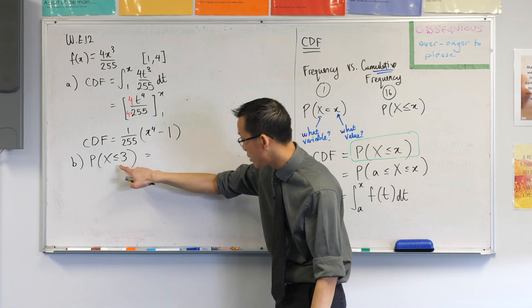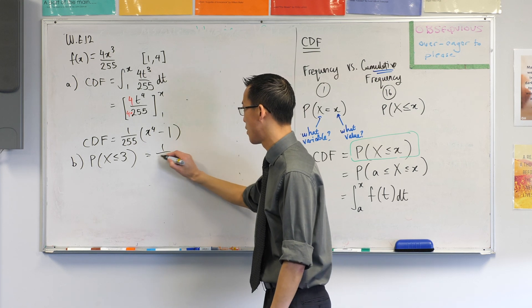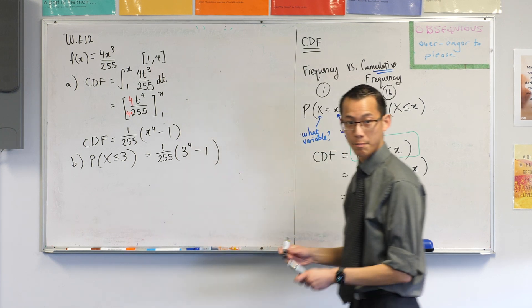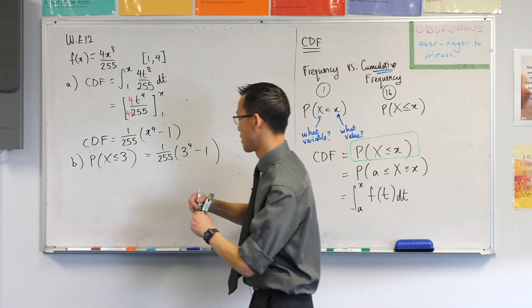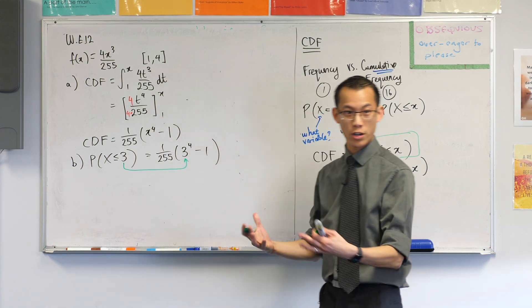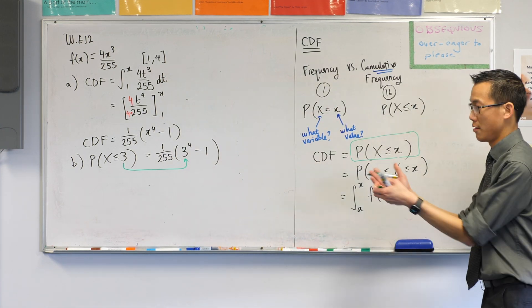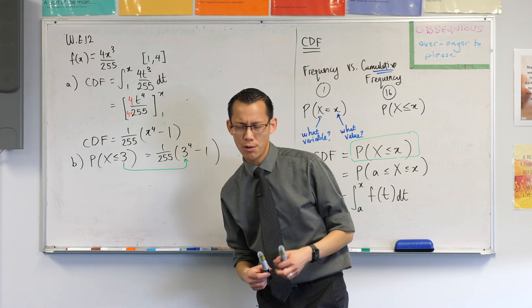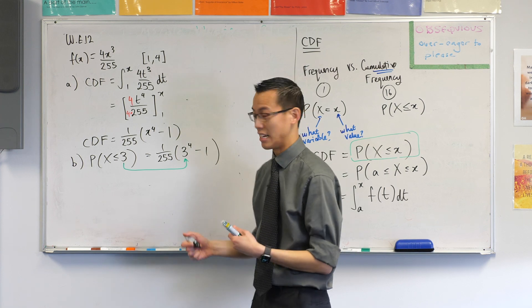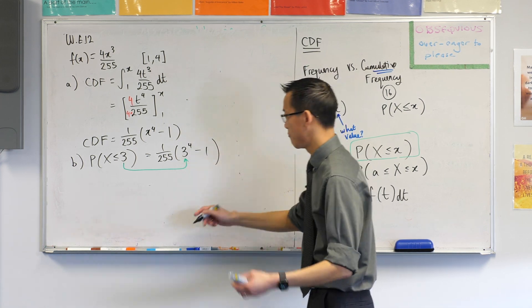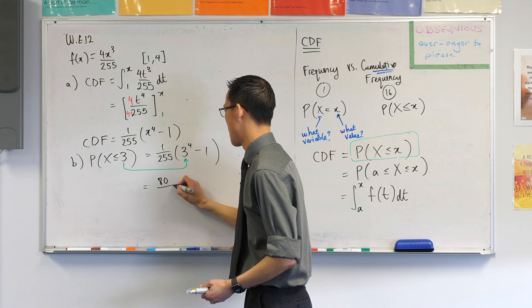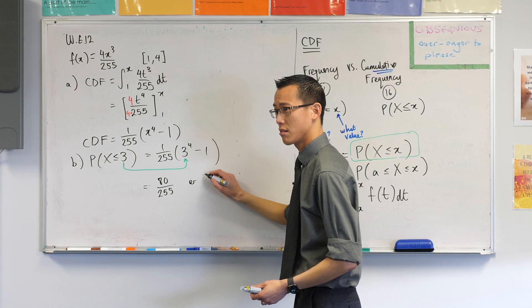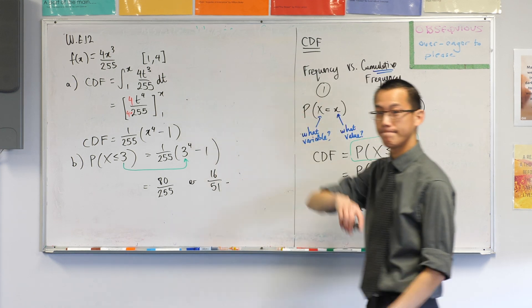Do you see that? There goes the 3 into the x. So it's 1 over 255, 3 to the power of 4 minus 1. So let me just make that a little more obvious. There goes the 3 being substituted into the only spot where there's a little x. That was the little x that I was interested in this time. Last I checked, 3 to the power of 4 is 81. So 81 take away 1 is 80. That must simplify. They're both factors of 5. What's that become? 16 on 51. Done. That's it.